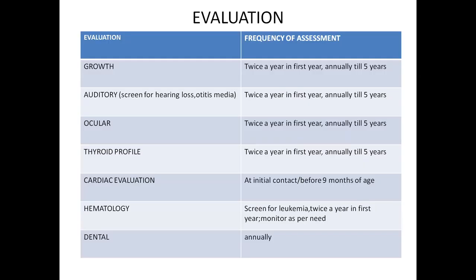Prenatal tests for Down syndrome screening: quadruple marker from maternal serum at 15–22 weeks with 80% sensitivity — four markers are inhibin, free beta-HCG, alpha-fetoprotein, and unconjugated estriol. Triple marker (commonly done): free beta-HCG, alpha-fetoprotein, unconjugated estriol. Combined ultrasound and maternal serum markers including nasal bone has sensitivity of 95%. Invasive tests: karyotyping by chorionic villus biopsy, amniocentesis, or cord blood sampling for chromosomal and DNA analysis. FISH gives rapid results within 24–48 hours.